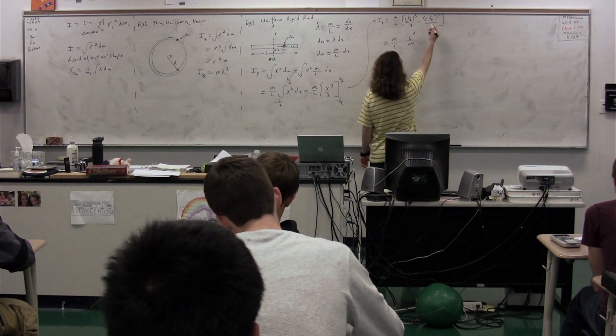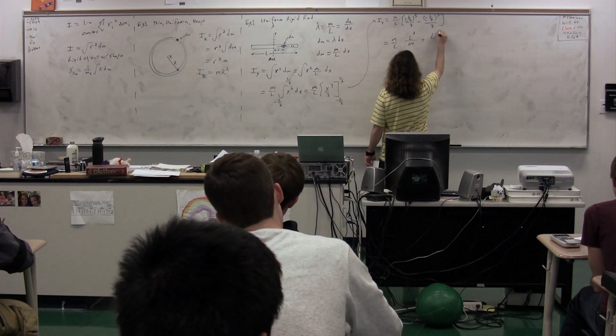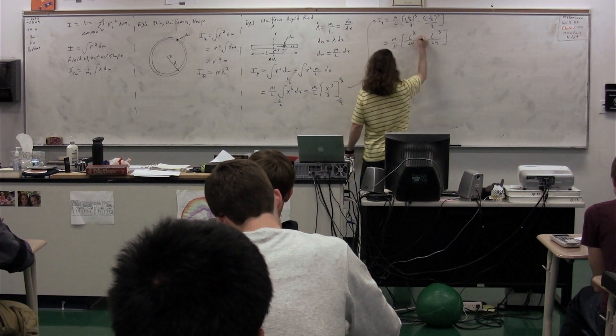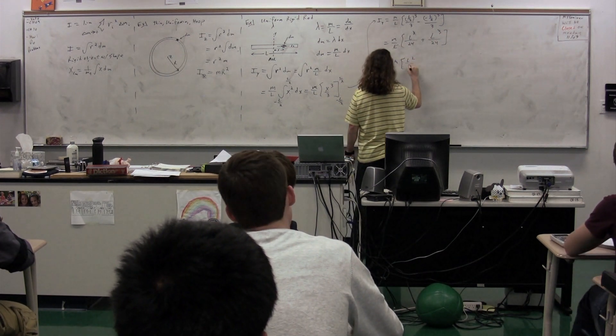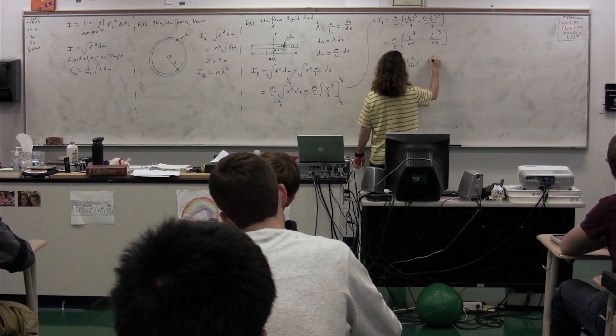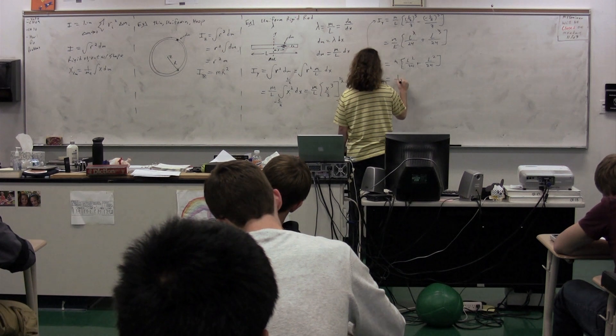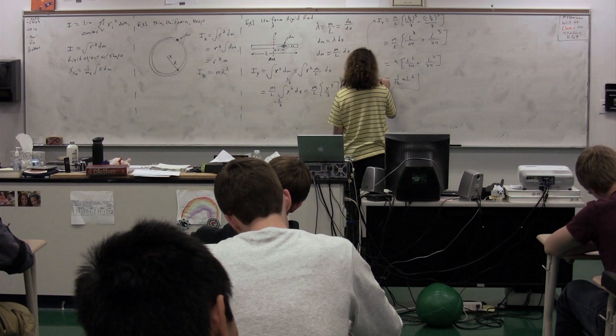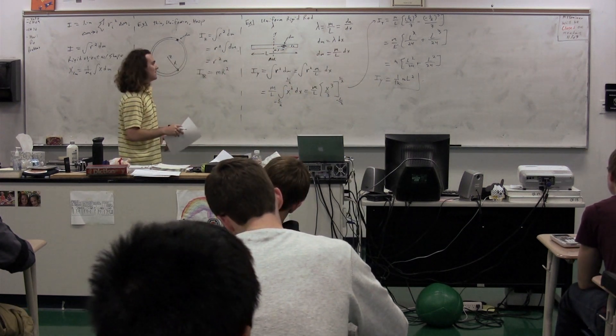Again, we have one of our L's is going to cancel out. We'll get L squared. So m times L squared over 24 plus L squared over 24. And so this is equal to 1/12 mL squared. The moment of inertia about the y-axis.